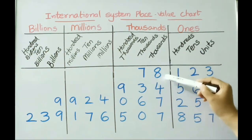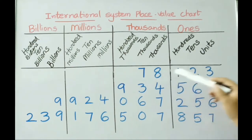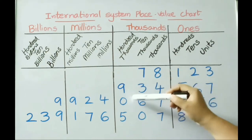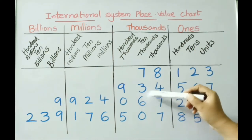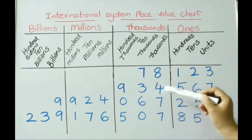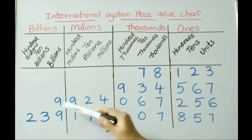Here: ten thousands place 7, thousands place 8, hundreds place 1, tens place 2, ones place 3 — so the number is seventy-eight thousand one hundred twenty-three. See the next number: hundred thousands place 9, ten thousands place 3, thousands place 4 — so nine hundred thirty-four thousand five hundred sixty-seven.